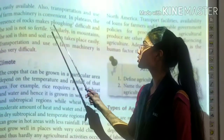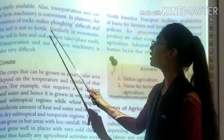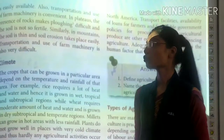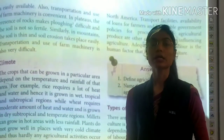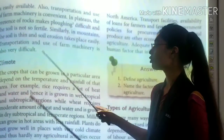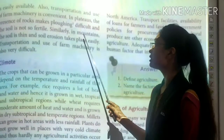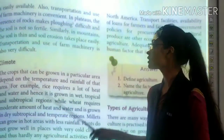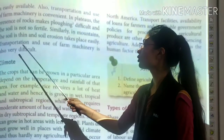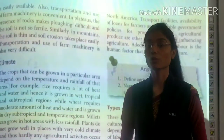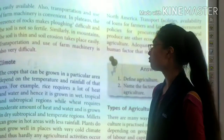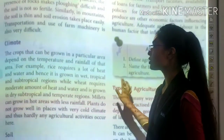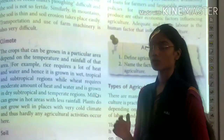In plateau regions, the presence of rocks makes ploughing difficult and the soil is not very fertile. Similarly, in mountain areas, the soil is thin, soil erosion makes agriculture very difficult, and transportation facilities are limited or unavailable.